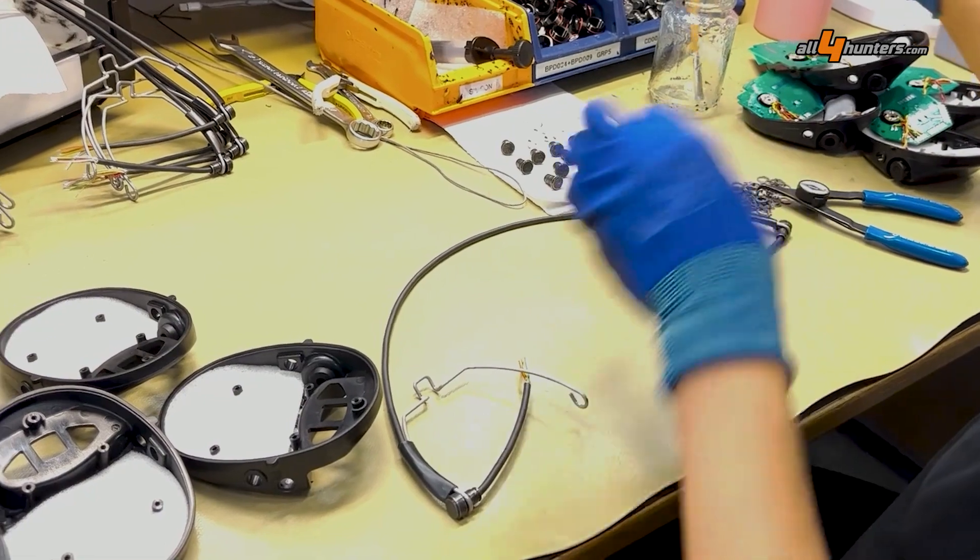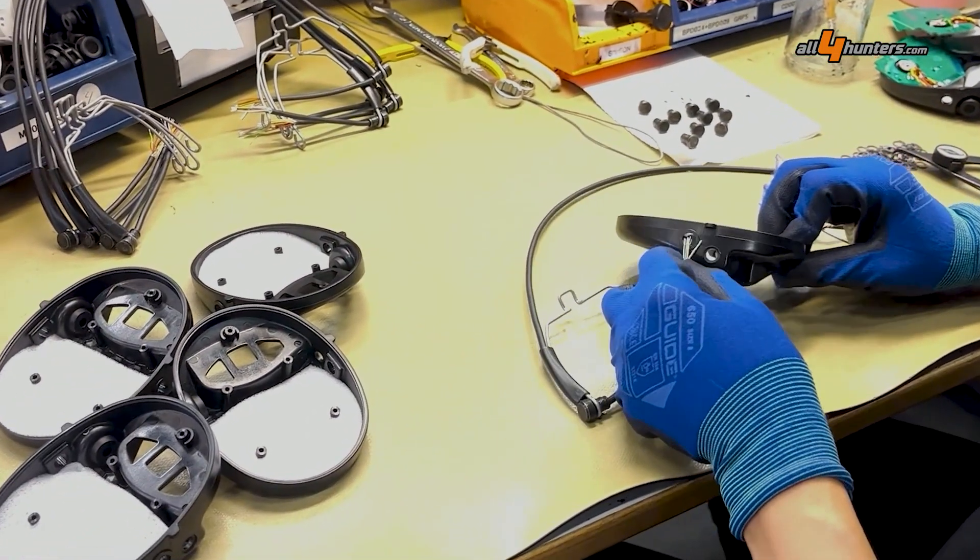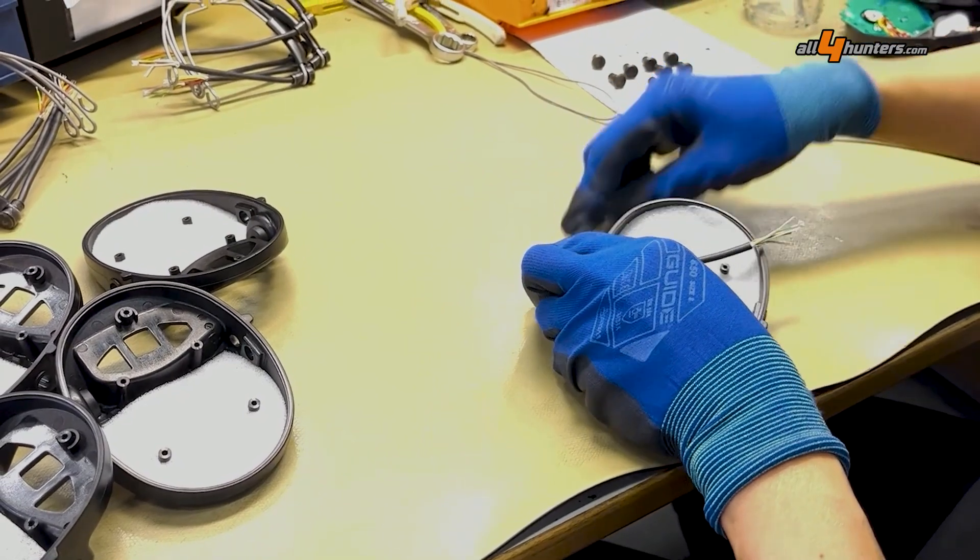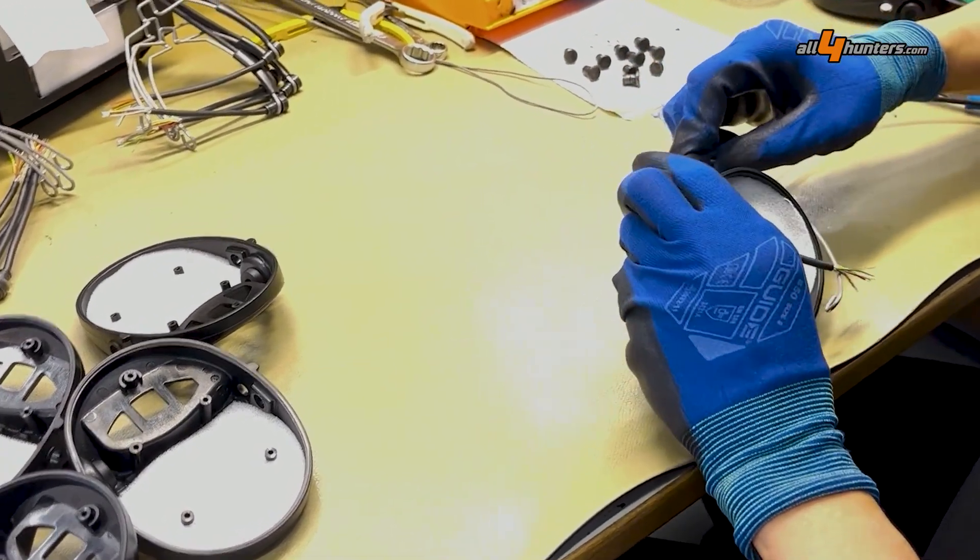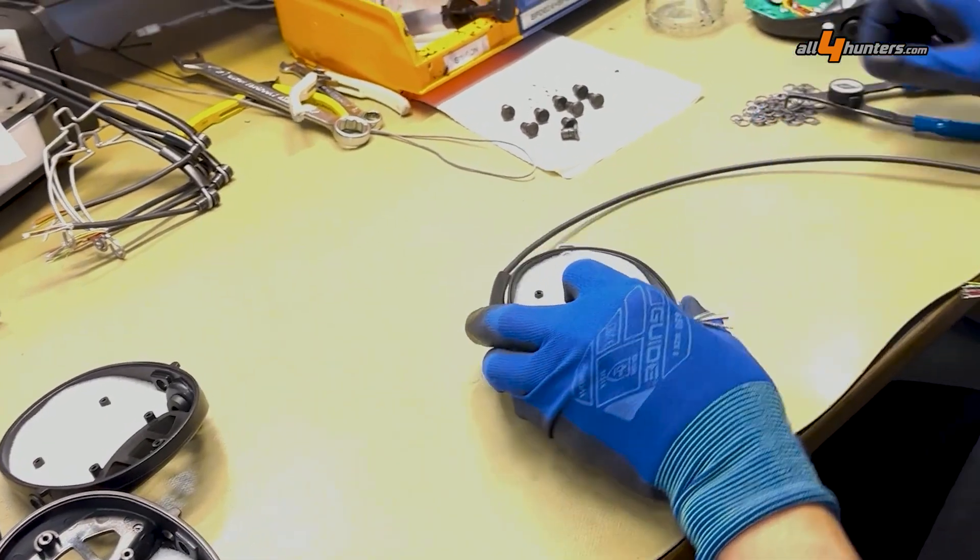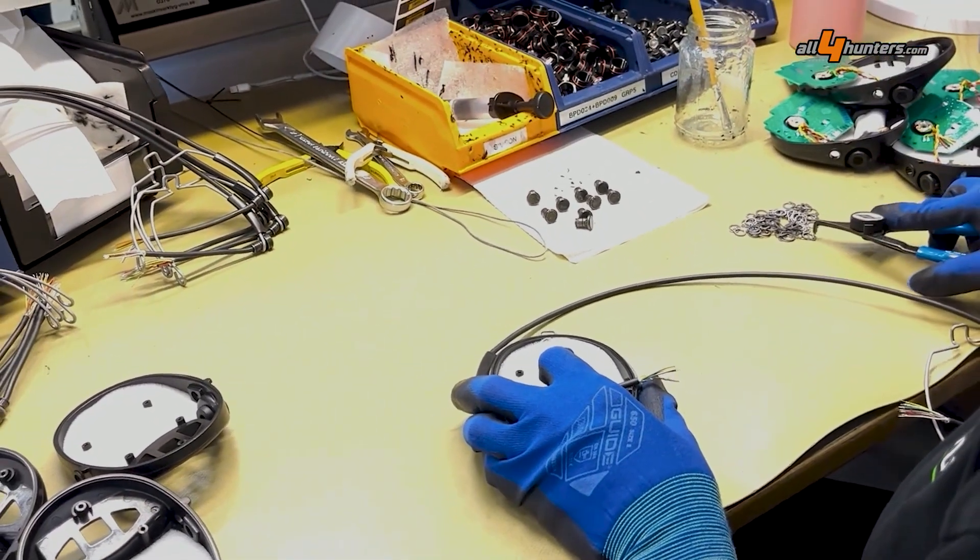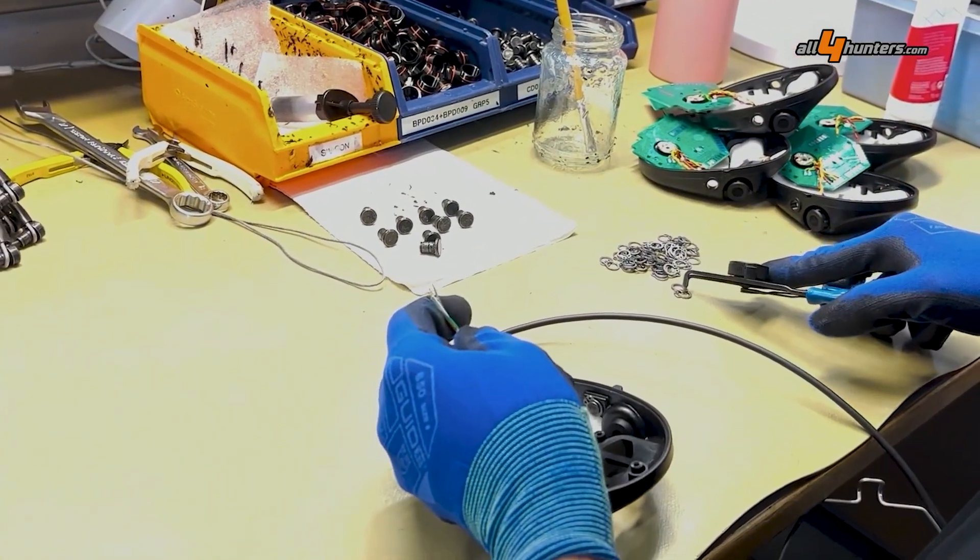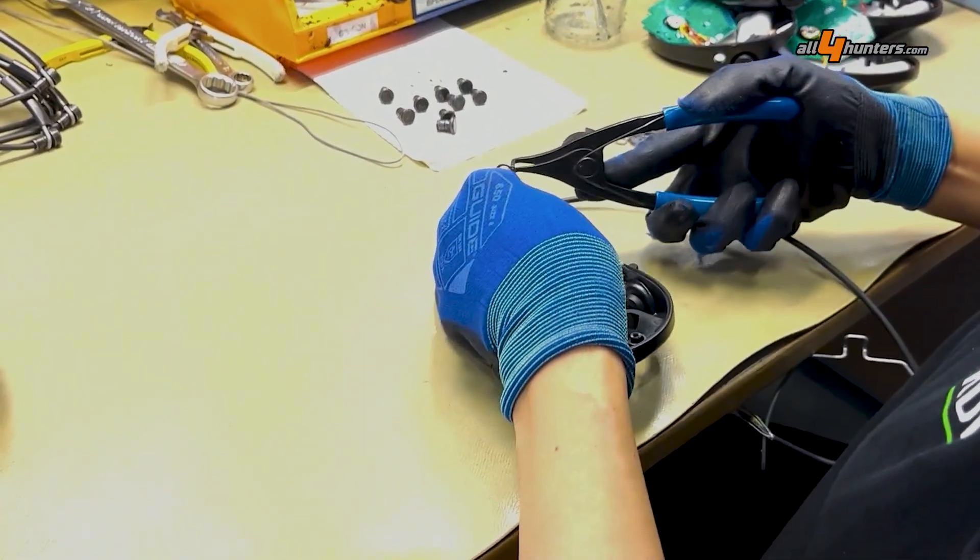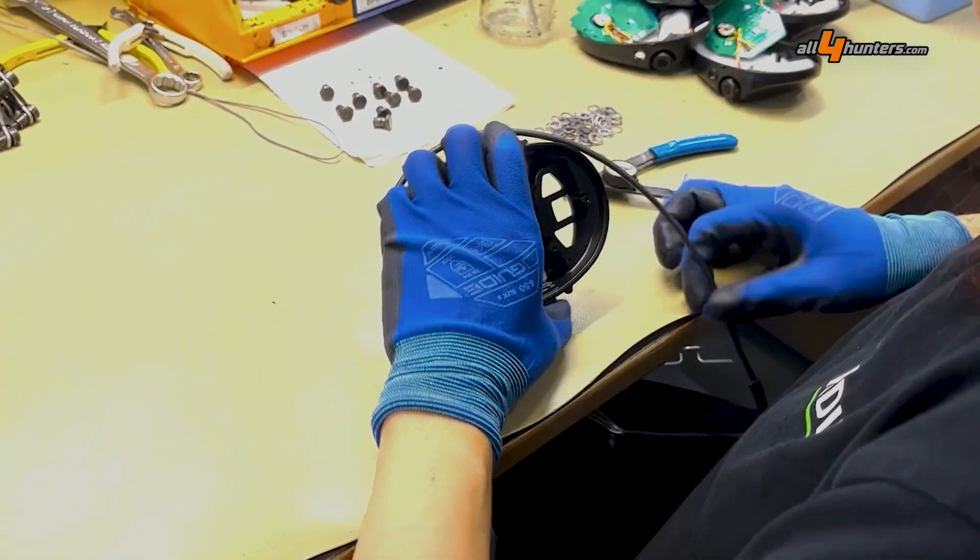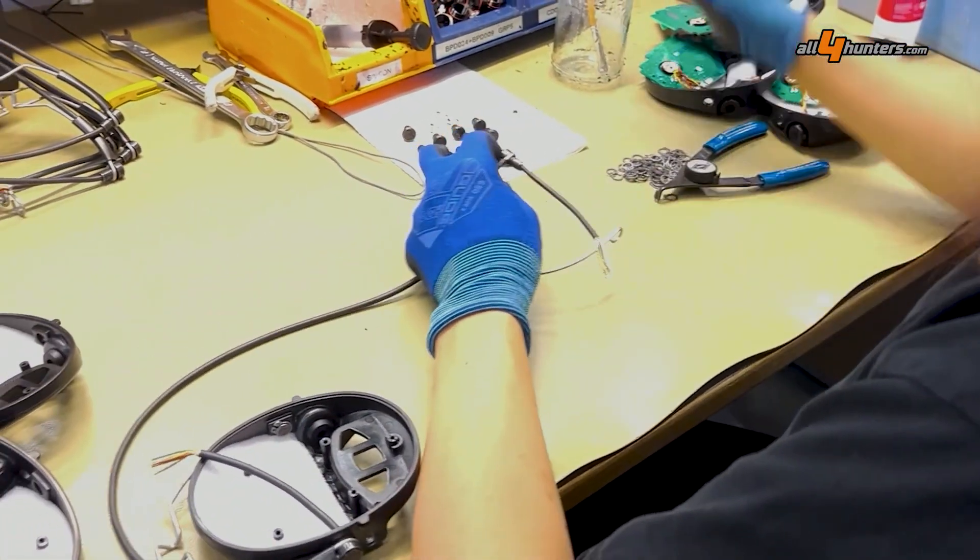Now the ear protector stirrups are inserted with an appropriately dense compound and secured with a seager ring that engages in the bolt's groove. This operation is duplicated for both of the ear cups.